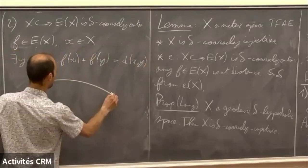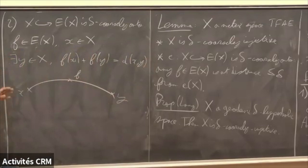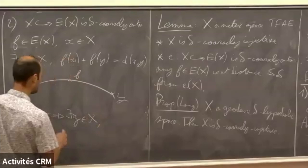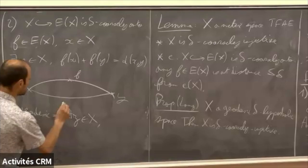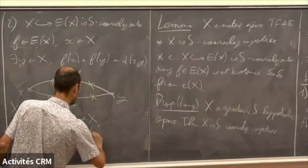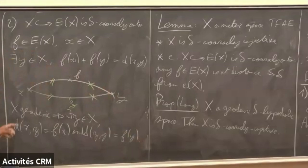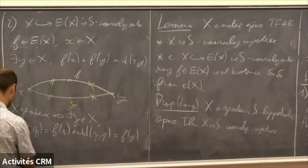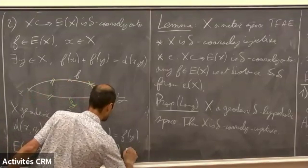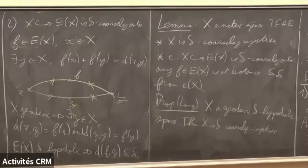The second part is that the embedding of X into E(X) is delta coarsely onto. This is simple: for any f in E(X) and any point x in X, by the minimality property for any x there exists y in X such that f(x) + f(y) ≈ d(x, y). I assume it's exactly equal for simplicity. Since my space X is geodesic, I can find a point z in X which is exactly at the same distance but inside X: d(x, z) = f(x) and d(z, y) = f(y). But now these four points live inside E(X), which is delta-hyperbolic, so the distance between f and z is at most delta.